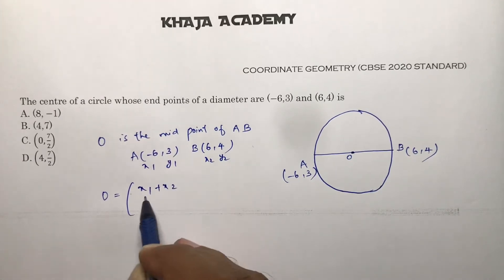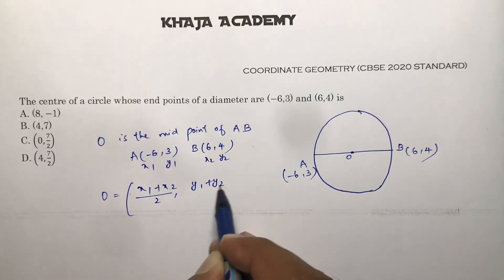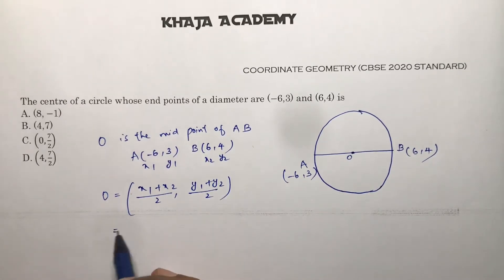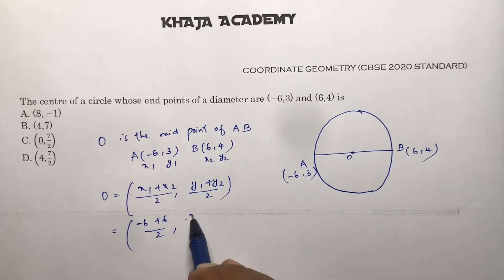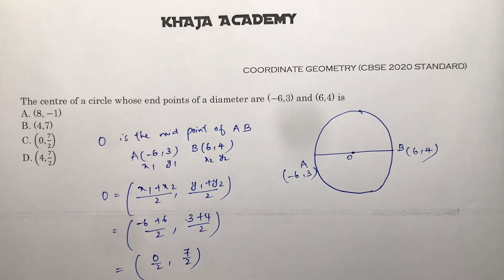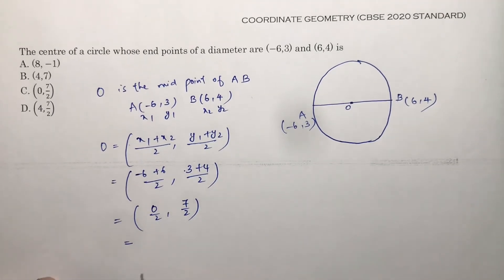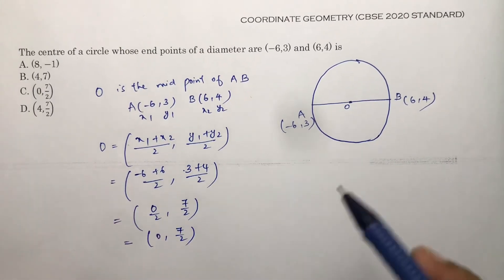Using the midpoint formula: (x1 + x2)/2, (y1 + y2)/2 — that gives us (-6 + 6)/2 and (3 + 4)/2, which equals 0/2 and 7/2. So the answer is (0, 7/2), and the correct option is C.